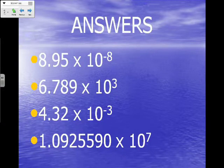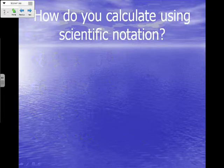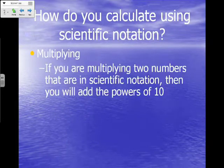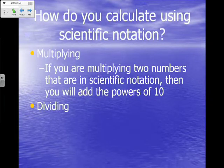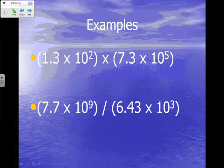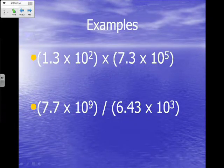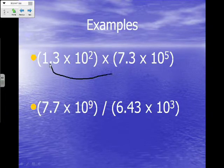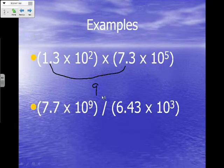There's one more thing we want to learn about scientific notation, and that's how to calculate numbers when they're in scientific notation. For multiplying, if you're multiplying two numbers in scientific notation, you will add the powers of 10. When you're dividing two numbers in scientific notation, you're going to subtract the powers of 10. We're going to do two problems together, then you'll do two on your own.